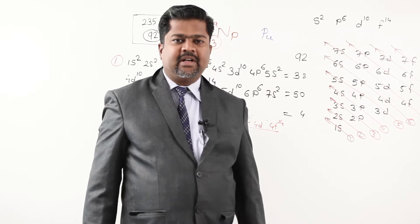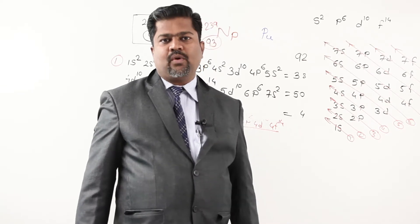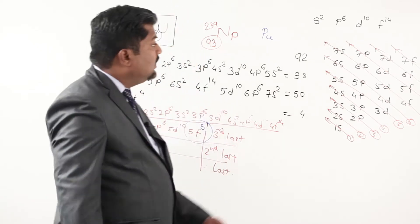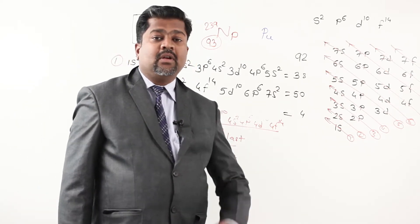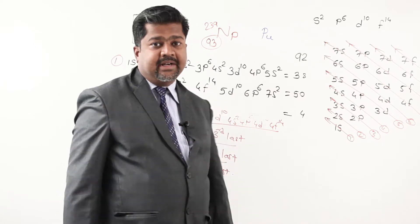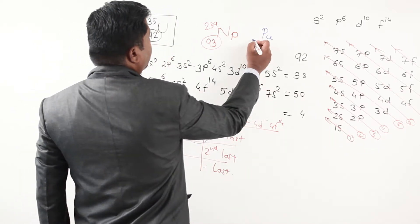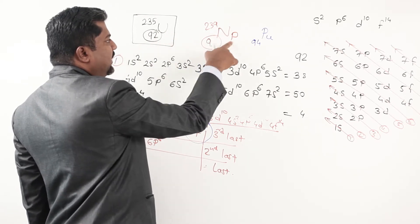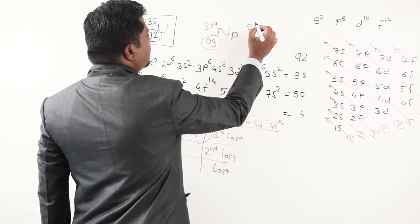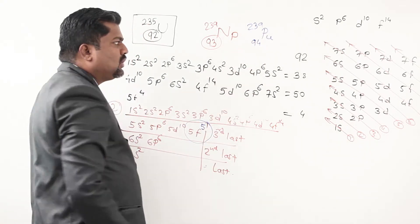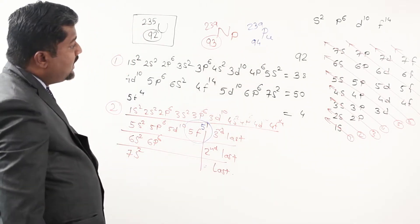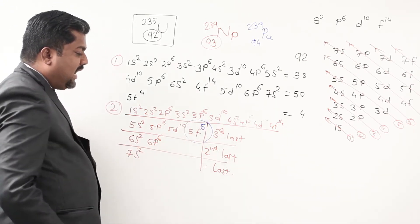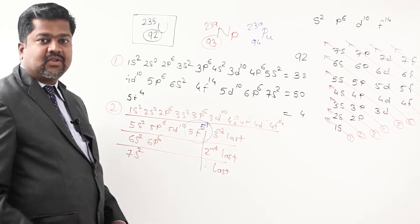Pluto is not considered a planet now, but before 2006 it was. So: Uranus → uranium, Neptune → neptunium, Pluto → plutonium. Plutonium has atomic number 94, mass number 239. For electronic configuration, you can immediately say: only change 5f4 to 5f6 — make it 5f6 — everything else remains the same.